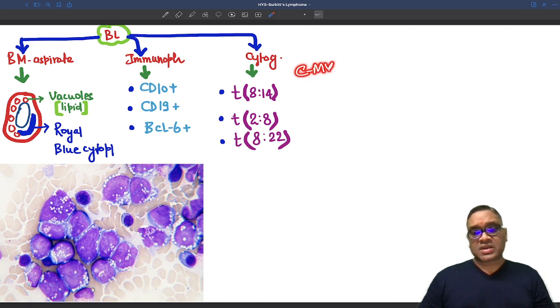Cytogenetics: there will be a CMYC translocation. Because of the CMYC translocation, you are going to see translocation t(8;14), translocation t(2;8), and translocation t(8;22), because chromosome number 8 is the location for CMYC. So enjoy learning, best wishes.